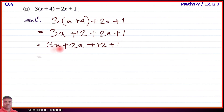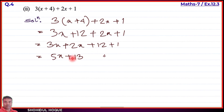Combining: 3x plus 2x equals 5x. Constants: 12 plus 1 equals 13. So the simplified answer is 5x plus 13. Now to find the value, we put x equal to minus two.